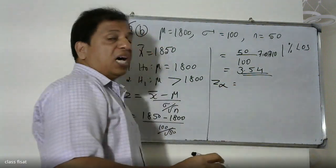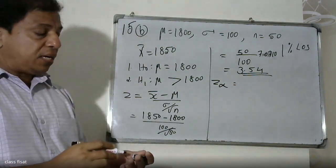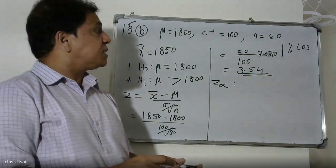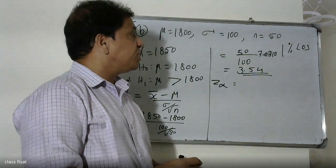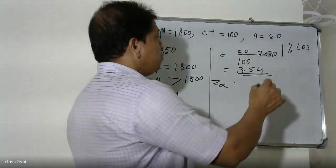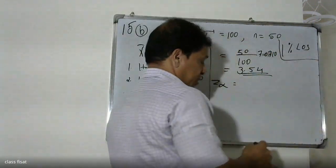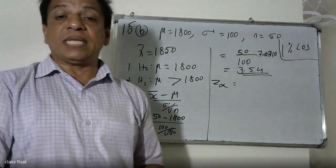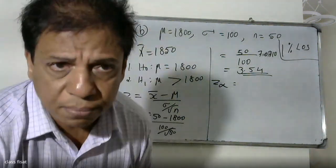At the 1% level of significance for a one-tailed test, we look up the table value. At the 99% confidence level, the table value is required.